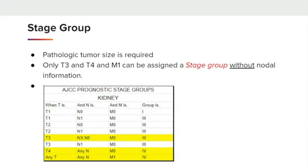For stage grouping, a pathologic tumor size is required. T3, T4, and M1 can be assigned a stage group without nodal information, as shown in the highlighted areas of the chart. A T3 when N is NX or N0 can be assigned Group 3. T4 with any N and M0 can be assigned Stage 4. Any T, any N, and M1 can also be assigned Stage Group 4.